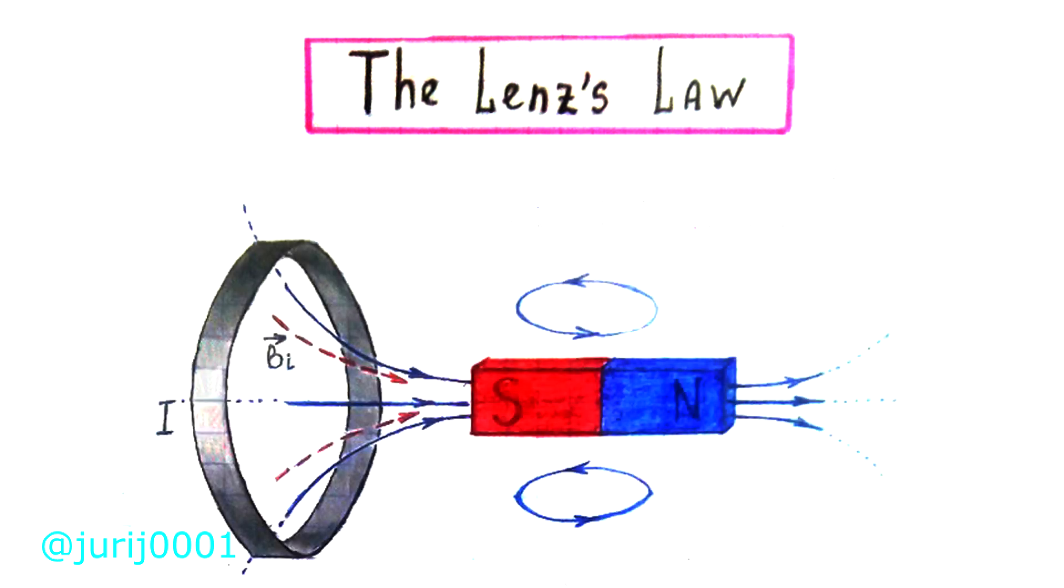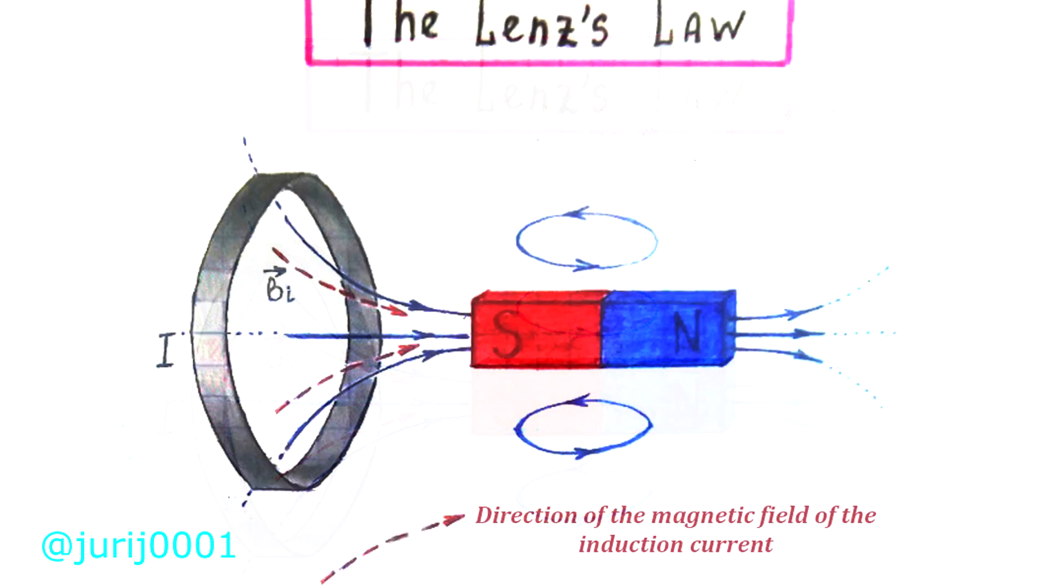So imagine that the textbook gives such a drawing. The direction of the magnetic field of the induction current that occurs in the ring is given. As you can see, the direction of the magnetic field of the induction current and the direction of the magnetic field of the permanent magnet are the same.